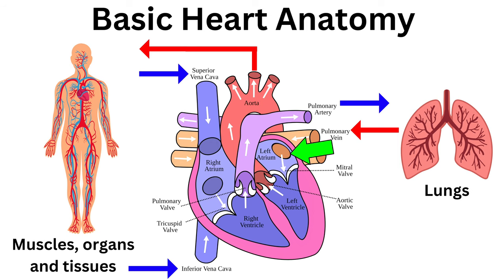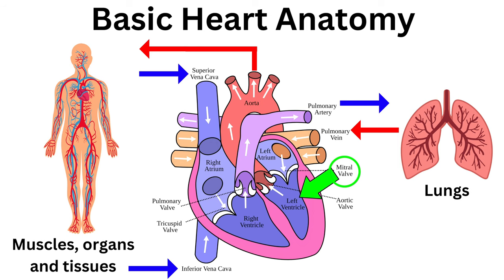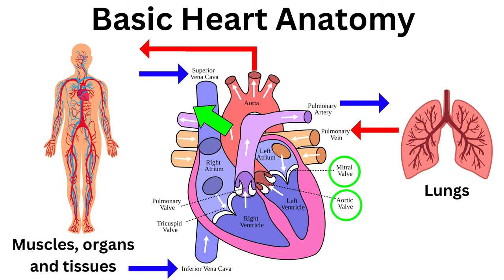The mitral valve then allows the blood to pass from the left atrium into the left ventricle. The oxygen-rich blood is then pumped by the left ventricle through the aortic valve and out the aorta via the arteries to the muscles, organs and tissues in the body.